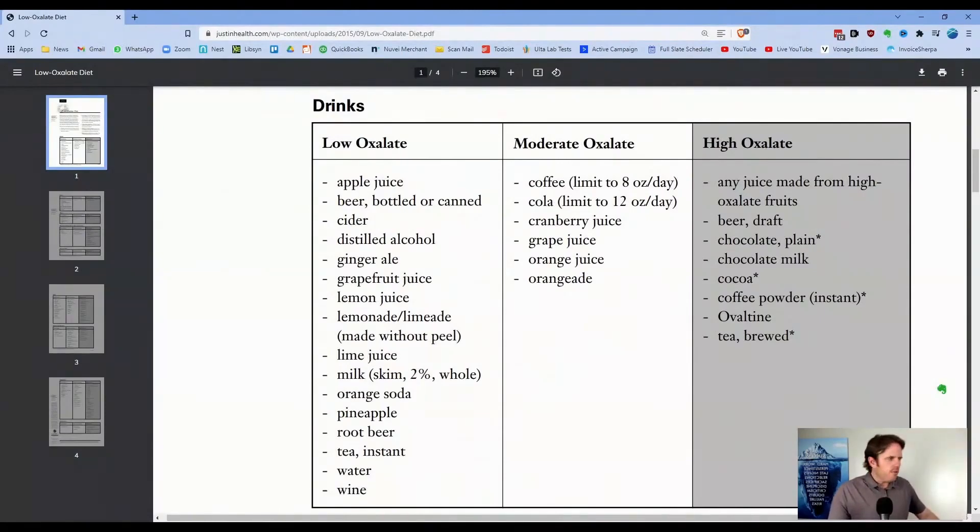You also see it in vulvodynia, vaginal pain, it's also a big deal. We'll run an organic acid test. There's one by Great Plain Labs that we'll use that has a marker for oxalates. A lot of times oxalates can be made by fungus and yeast. So we look at deorabinose, we'll look at yeast in the stool to get a window of that.